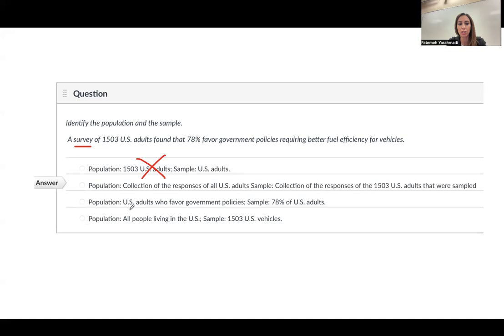Number three says population is U.S. adults who favor government policies and sample is 78%. It's not correct. This 78% is the result of that survey. In that survey of 1,503 adults, 78% favor government policies. And finally, the last one says population is all people live in the United States and sample is 1,503 U.S. vehicles. It's not.